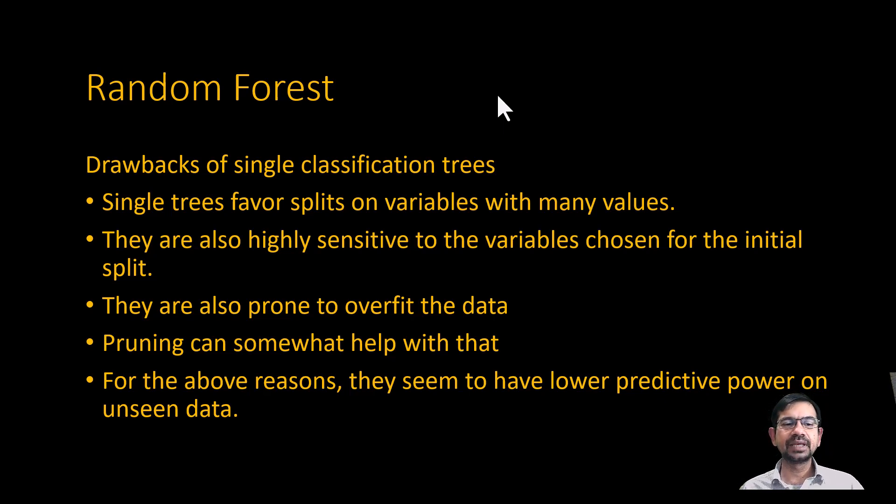These trees are also highly sensitive to the initial splits or the variables chosen for the initial split. Often when we run these trees again, the same variable may keep getting chosen for the initial split. Because trees can grow into fairly large structures, they can tend to overfit the data. That is, they will do very well on the training set, but they may not do as well when new data is brought into the model for classification. Now, pruning those trees can be a way to avoid this overfitting. However, due to these reasons, classification trees can have low predictive power.